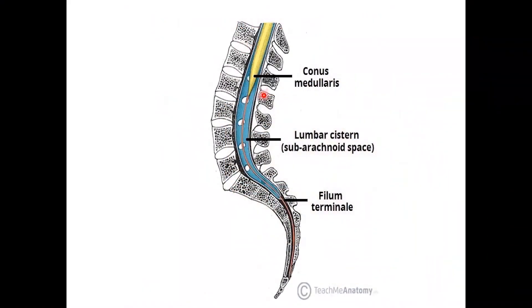The end of the spinal cord is called the conus medullaris, and its tapering end continues as the thin thread called the filum terminale all the way down to the first coccygeal vertebra, anchoring the spinal cord in place. This disproportion between the length of the spinal cord and the vertebral column is because the spinal cord finishes growing around the age of 4, while the vertebral column continues till the age of 14 to 18, so the vertebral column is longer than the spinal cord.